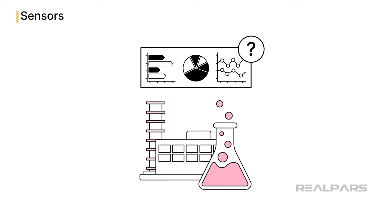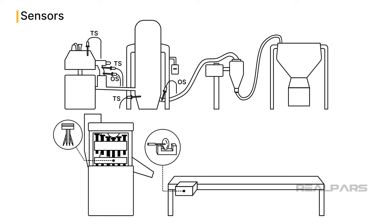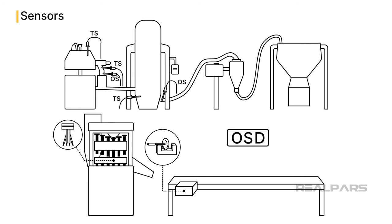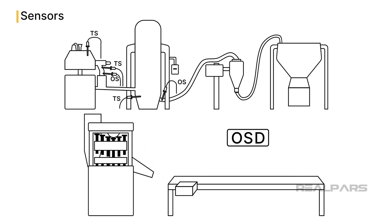How is process data gathered? As with any process, we install sensors in the process to provide critical data from the operation. I will use a standard Oral Solids Dosage Process or OSD Process as an example. OSD Processes are ones that take powdered ingredients, mix them, and press the mixture into tablets. To paint a clearer picture of the OSD process, consider how we are making a pill from powdered ingredients. It is akin to baking, but instead for medicine.